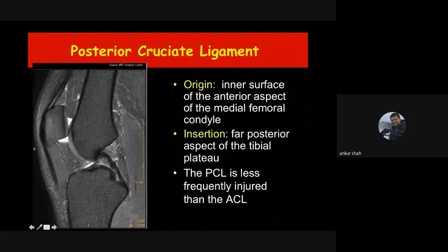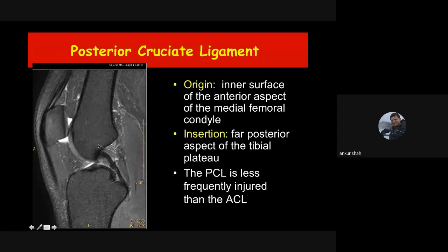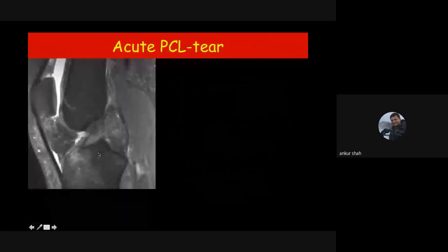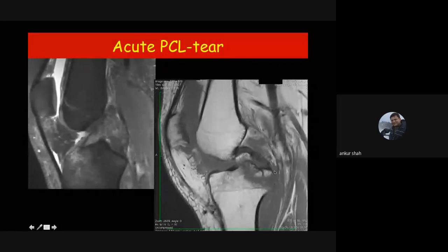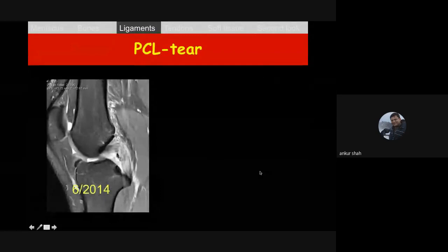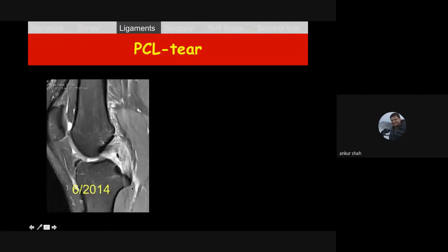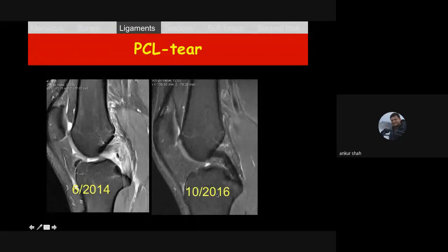The posterior cruciate ligament is relatively simpler compared to the ACL because it is homogeneously hypointense. It is formed by two bundles — the anterolateral and posteromedial — which are tightly attached together. The PCL is less frequently injured than the ACL. Sometimes you do see complete tear of the posterior cruciate ligament, but more commonly PCL injuries are avulsion fractures at its tibial attachment. If there is an isolated PCL tear, it sometimes does not require surgery and can heal on its own, healing with fibrosis over time.